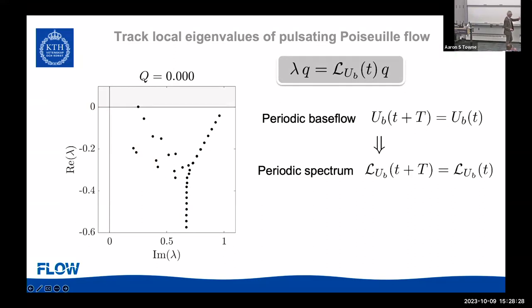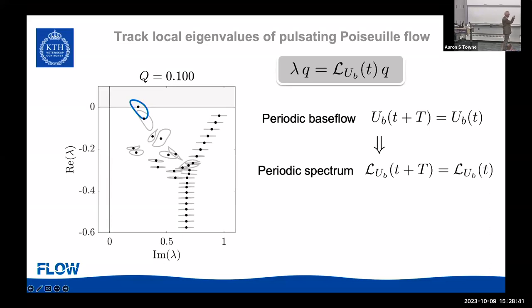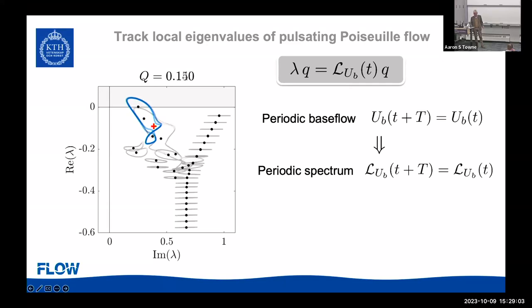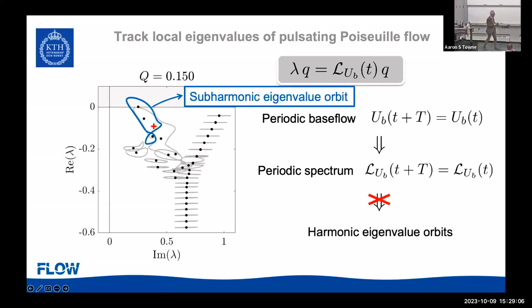Here is the spectrum again. At zero amplitude of oscillation, we have the standard Poiseuille spectrum. If we change to 10% oscillation, the eigenvalue over that period changes like this — sometimes a bit more unstable and sometimes a little less. If we increase the flow rate further, it turns out that one eigenvalue orbit touches another eigenvalue orbit, and then you get a subharmonic eigenvalue orbit. There's a periodic spectrum, but it's not a harmonic orbit — it's subharmonic.